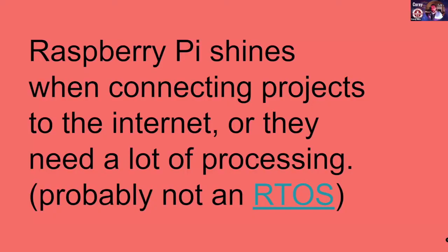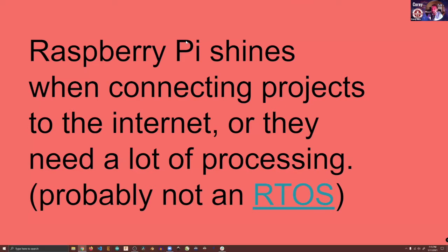Raspberry Pi is really a powerhouse. It's really good when you're connecting a project to the internet, if you need a lot of processing, or if you really want to learn how the whole computer works. But it's not a real-time operating system — there's a really good video that explains what a real-time operating system is. A good question is: what did people do before Arduino, Raspberry Pi, and Adafruit?